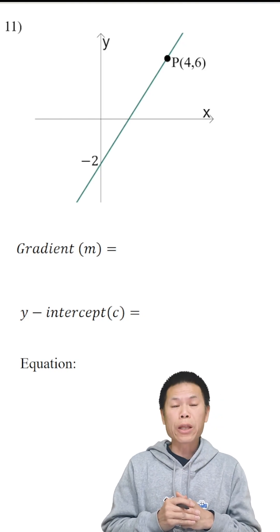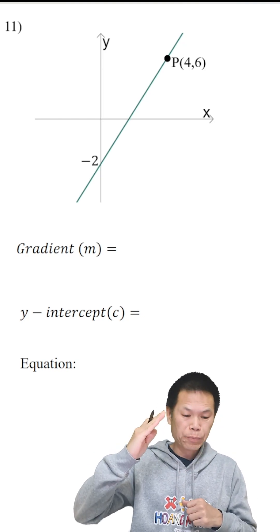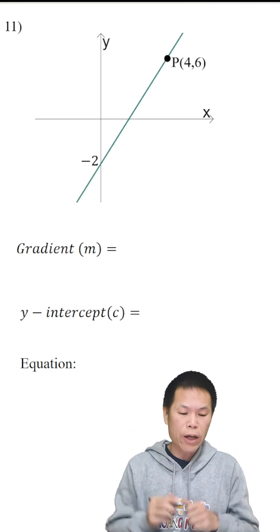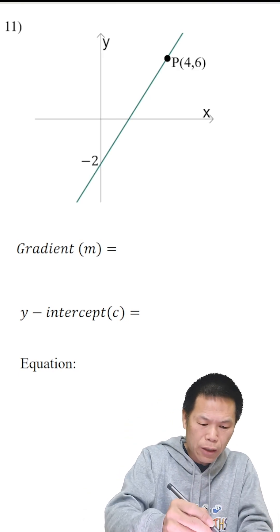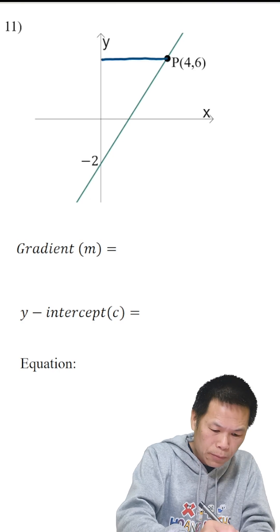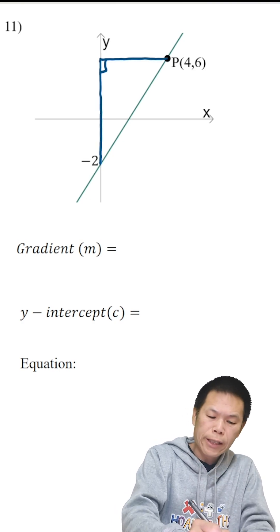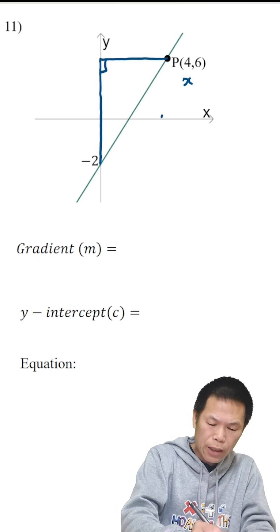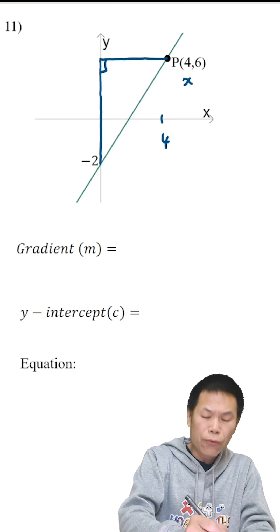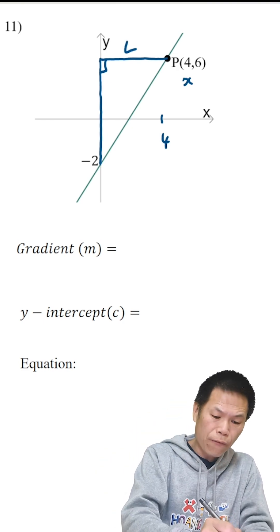First of all, we know that the gradient is positive because it's heading this way. So it's a positive gradient. Let me just draw a triangle first. The easiest way is we draw like this. So now we know that this is the x value, which is 4. So therefore, we know that from 0 to 4 is 4 units. So the run is 4 units.